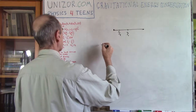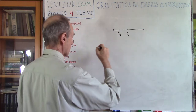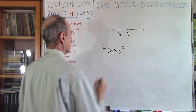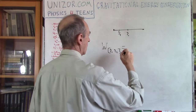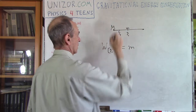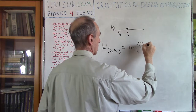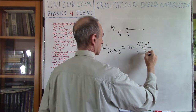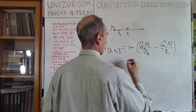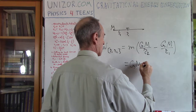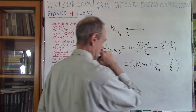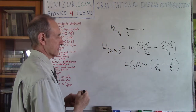It's calculated using the formula derived in the previous lecture: W from R1 to R2 is equal to the mass of the object times G·m divided by R2 minus G·m divided by R1, or equivalently G·m·(1/R2 − 1/R1). Now let's think about the sign of this — the sign is very important.